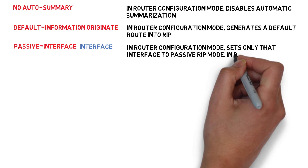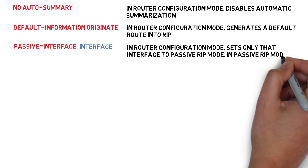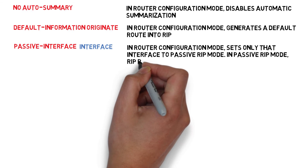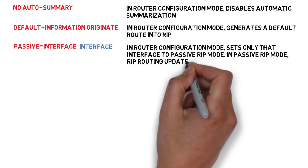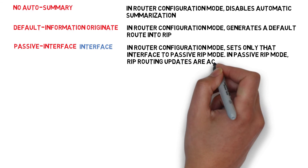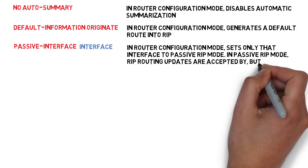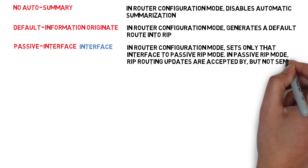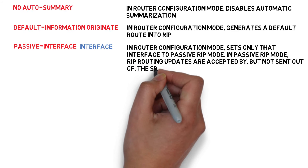Passive Interface — in router configuration mode, sets only that interface to passive RIP mode. In passive RIP mode, RIP routing updates are accepted by, but not sent out of, the specified interface.